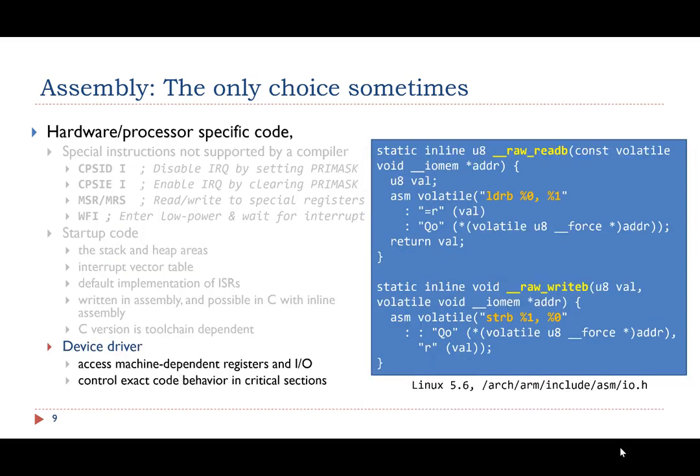The third example is that sometimes we have to use assembly when we develop device drivers. Typically, we use assembly or inline assembly to access machine-dependent registers and I/O, or to control the exact code behavior in critical sections that might cause deadlock.